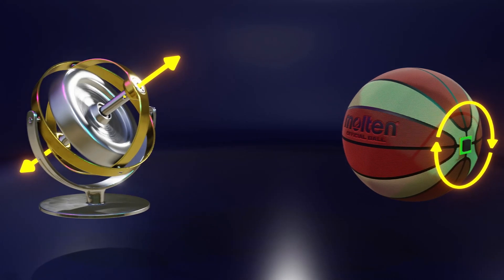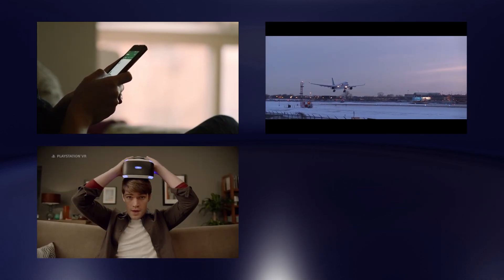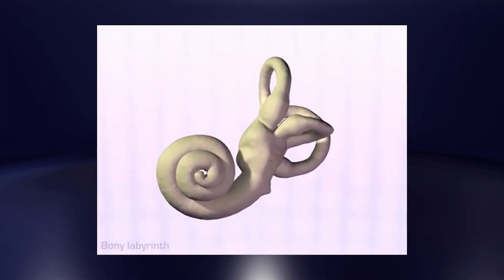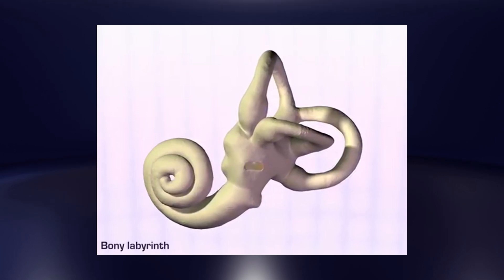Gyroscopes are used in a wide range of applications, including our phones, aeronautics, video game consoles and robotics. Moreover, our own body has a built-in gyroscope known as the vestibular system, which gives us information about our orientation and helps us maintain our balance.